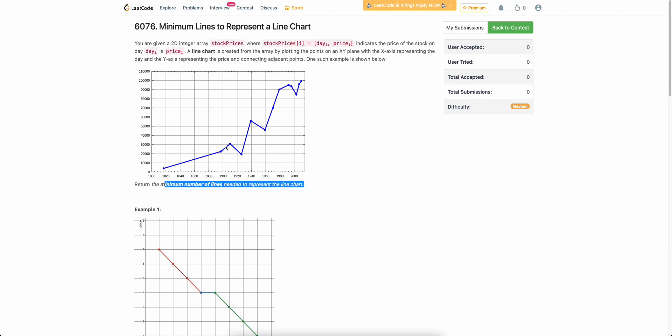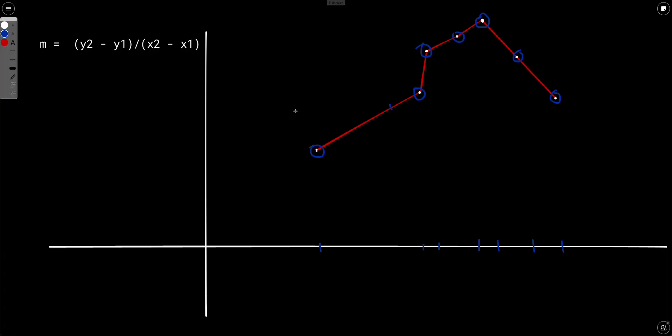So we will have to form a line chart and we need to find out what is the minimum number of lines that will be required to form that line chart. So let's try to understand this with an example.